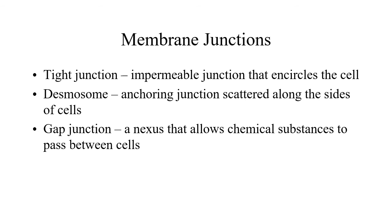The junctions between cells that help hold them together come in three kinds: tight junctions, desmosomes, and gap junctions. Tight junctions are like welding the two cells together, making it impermeable between them. Desmosomes hold two cells together but leave a little space between them, and they also have structures extending out from them for stabilization.